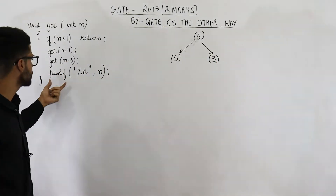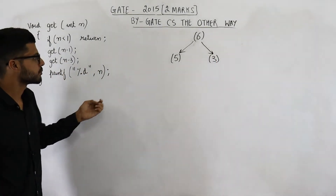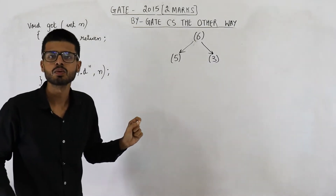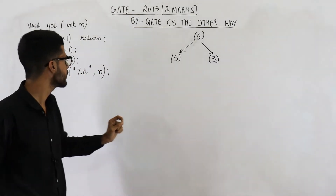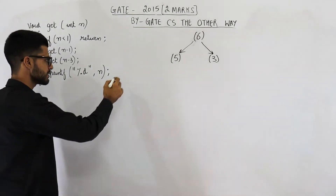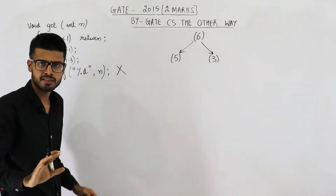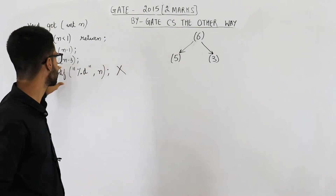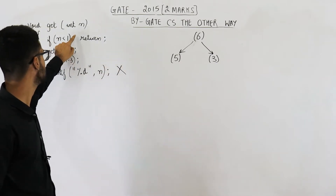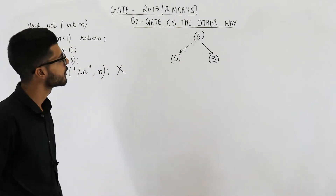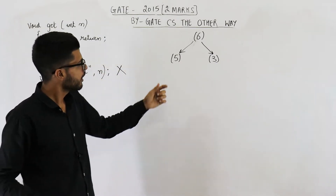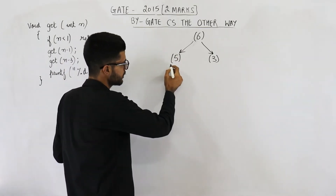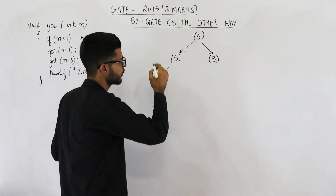The last line is a print statement. Here we are only trying to count function calls, so for now just ignore this line — we are not interested in its output. Just think that there are only 3 lines of interest. Now let us talk about this function call with 5. What is this function call going to do?